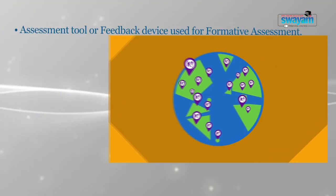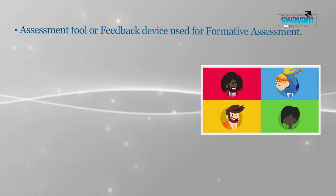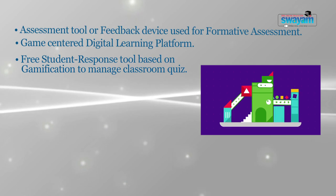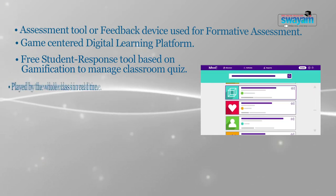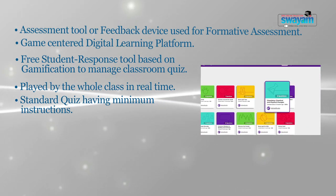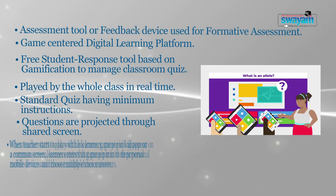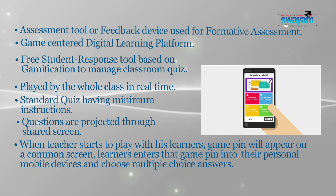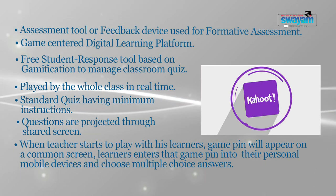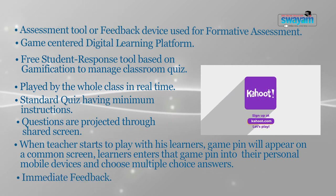What is Kahoot? Kahoot is known as an assessment tool or feedback device, which is used for formative assessment. It is a game-centered digital learning platform — a free student response tool based on gamification. Its main work is to manage classroom-size activities. It is a type of gamification which is played by the whole class in real time. It is just like a standard quiz, having minimum instructions. Questions are projected through a shared screen. When the teacher starts to play with learners, a game pin will appear on the common screen. Learners enter that game pin into their personal mobile devices and choose multiple choice answers. It is a powerful digital formative assessment tool because teachers and students receive immediate feedback. It gives really high enjoyment and maximum involvement, and learners hardly notice that they are being evaluated.